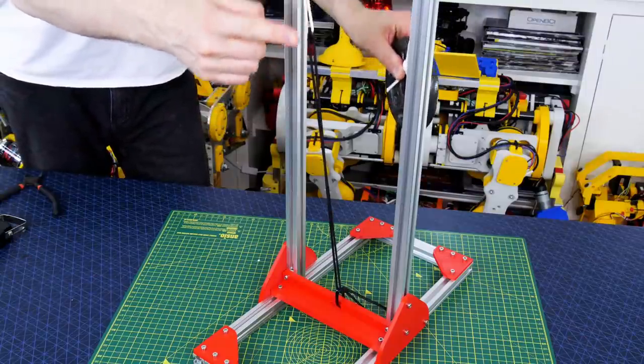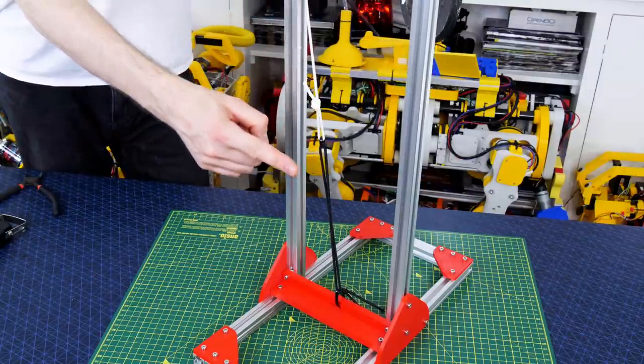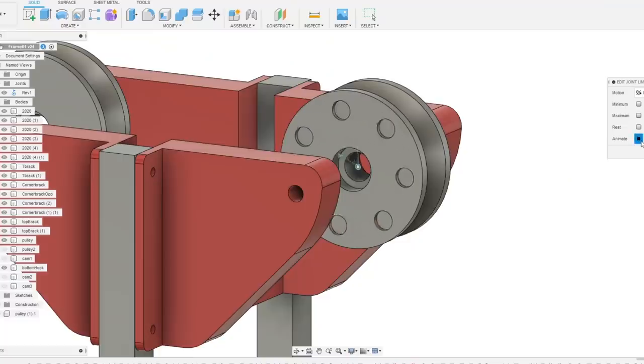So we want to keep the bungee cord or spring, but we need to find a way to stop it exerting more force as it stretches, instead applying a constant force to the weight throughout its range of motion.